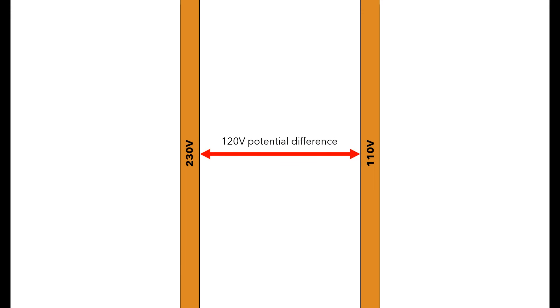If we had 230 volts in one pipe and 110 volts in the other, the potential difference between the two would be 120 volts. 230 volts minus 110 volts equals 120 volts, so potential difference of 120 volts.